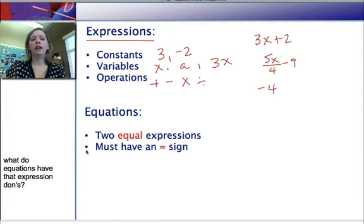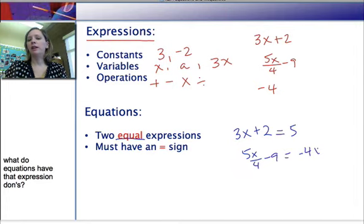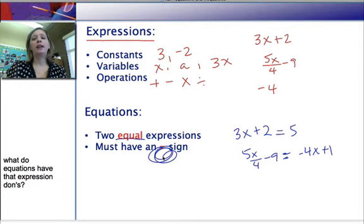Now equations are different. Equations have to have two equal expressions. So an equation might look something like this. Instead of just 3x plus 2, I have 3x plus 2 equals 5. Or 5x over 4 minus 9 equals negative 4x plus 1. So we always must have an equal sign when we're looking for an equation. So look for that equal sign. That's the difference really between what makes something an expression and what makes something an equation.